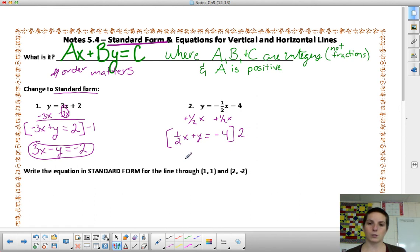So, 1/2 x times 2 would give me 1x. 1y times 2 gives me 2y. And, negative 4 times 2 gives me negative 8. My A value is positive. So, I didn't need to take care of that. I didn't have to multiply by a negative as well.